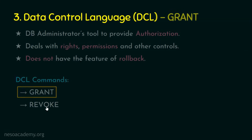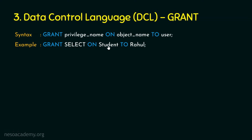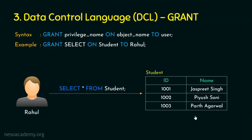Let's focus on the GRANT command. The syntax is: GRANT privilege_name ON object_name TO user. For example, granting the SELECT privilege on the student table to the username Rahul — if someone logs into the database with the username Rahul, Rahul will be able to perform SELECT operations only on the student table, such as SELECT * FROM student or SELECT id, name FROM student.